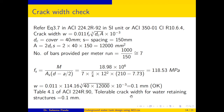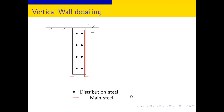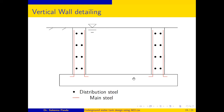The vertical wall detailing shows main steel on both faces: in Case 1 the load acts inward, in Case 2 outward, so steel is provided on both faces. Distribution steel runs perpendicular as dots in the detailing diagram. All bars are 12 mm diameter at 150 mm center-to-center on both faces since all are governed by minimum steel.